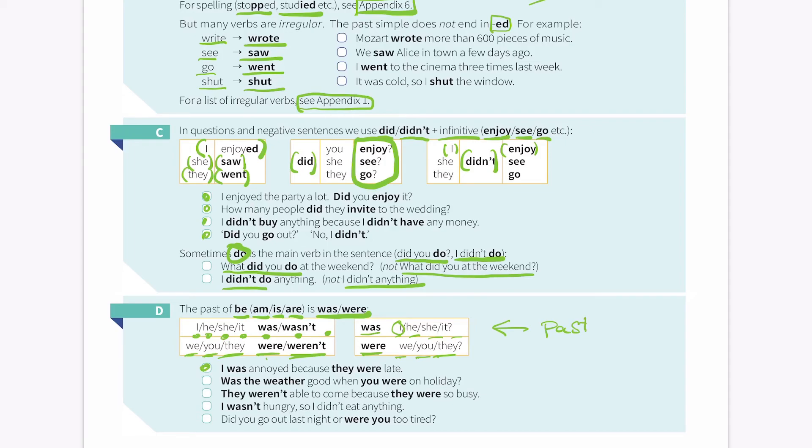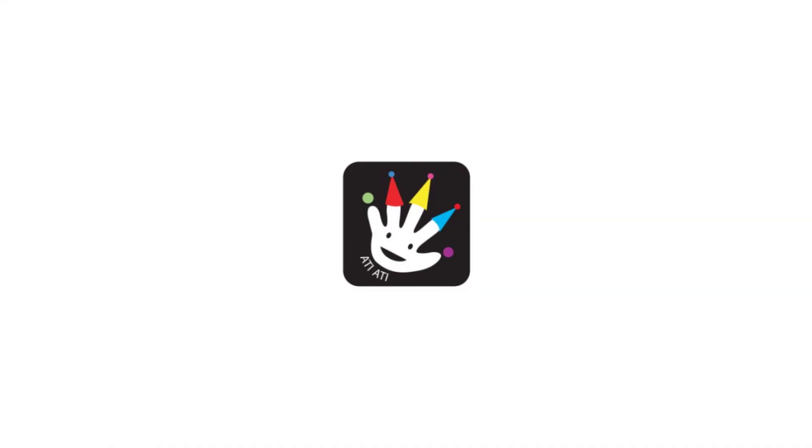So, for example, I was annoyed because they were late. Was the weather good when you were on holiday? They weren't able to come home because they were so busy. I wasn't hungry, so I didn't eat anything. Did you go out last night or were you too tired? Good job, everyone. Let's move on to the exercise questions next. See you later. Good job. Thank you.